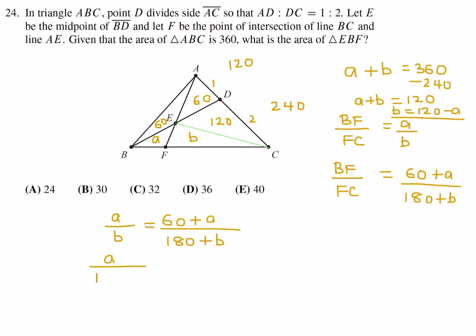So A over B is equal to 60 plus A over 180 plus B. And then use this fact that B is equal to 120 minus A. So A over 120 minus A equals 60 plus A over 180 plus B, which is 120 minus A. Now let's do some cross multiplying. So it's going to be 120 minus A times 60 plus A. And on this side, that's going to be A times 300 minus A, like that.